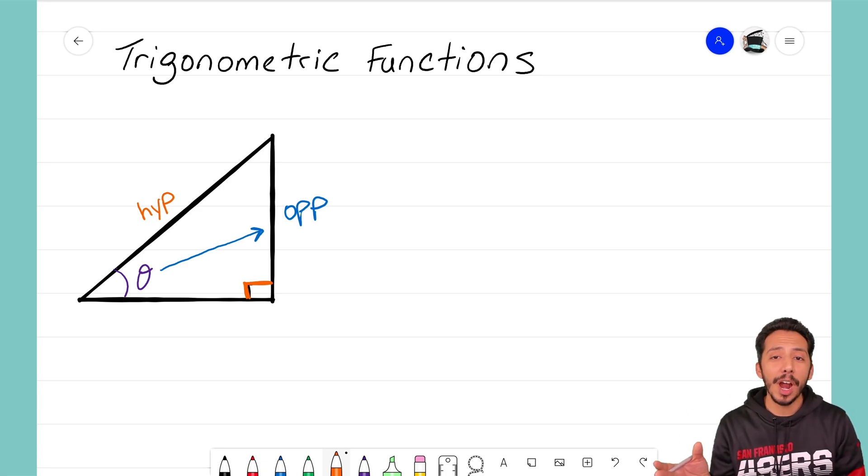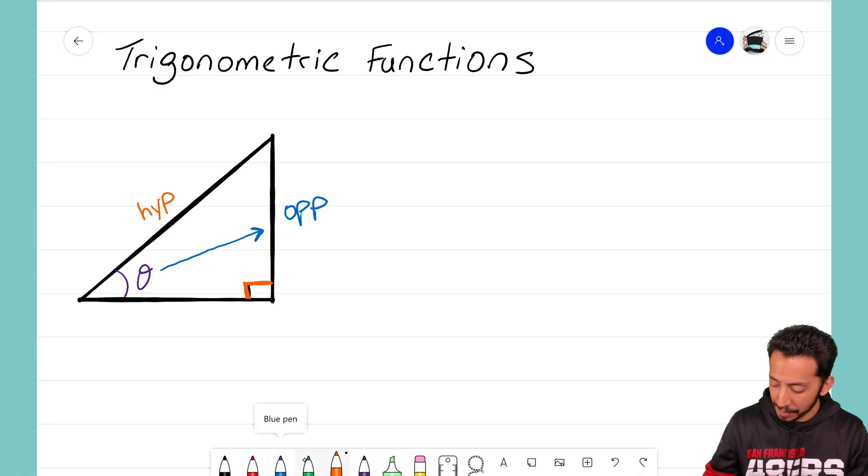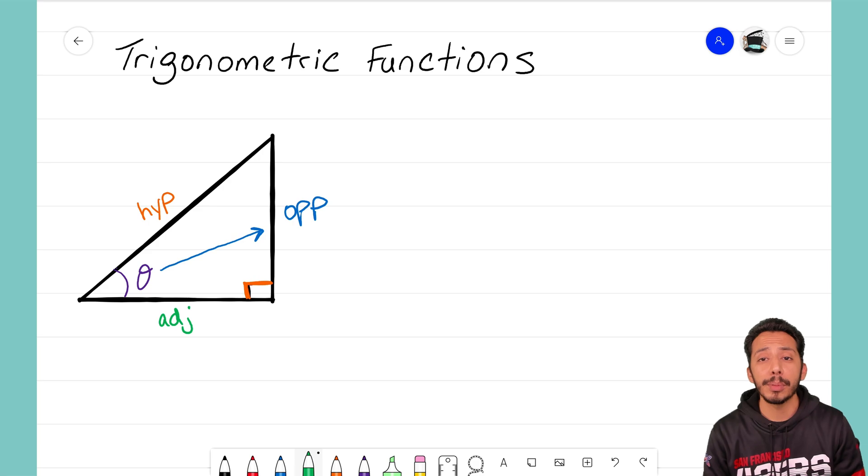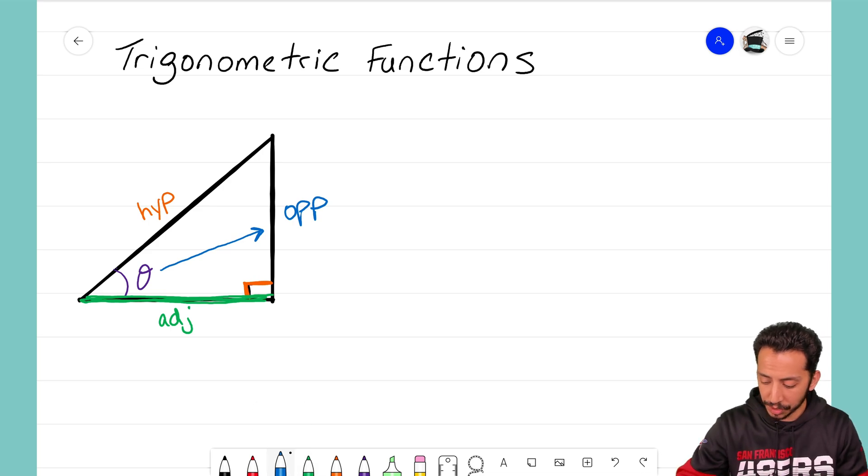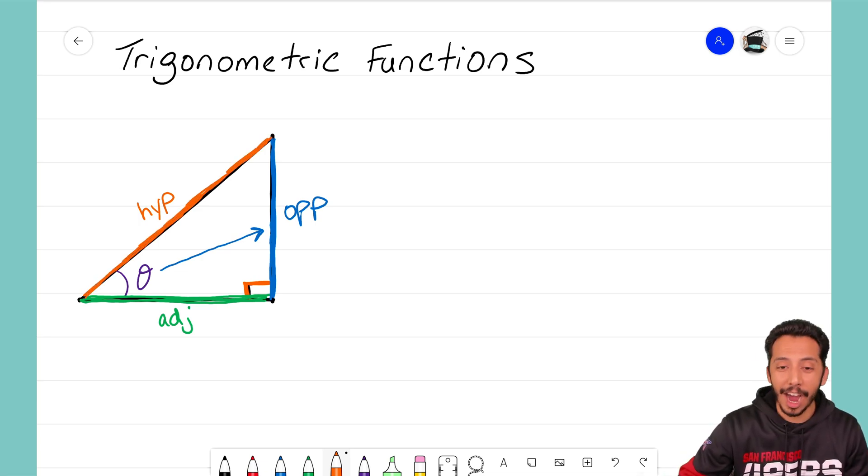Okay, so we have our opposite side, we have our hypotenuse. That means that this final side over here is the adjacent side. Remember, adjacent just means next to. This side that I'm writing out in green is the side that is next to my reference angle. It literally is adjacent to that reference angle. We see that this blue side here, the opposite side, is the side that is opposite of my reference angle, and finally that third side that we identified is our hypotenuse.